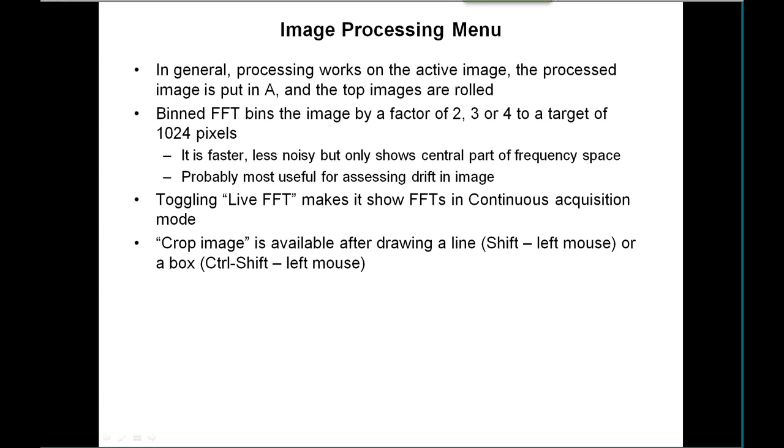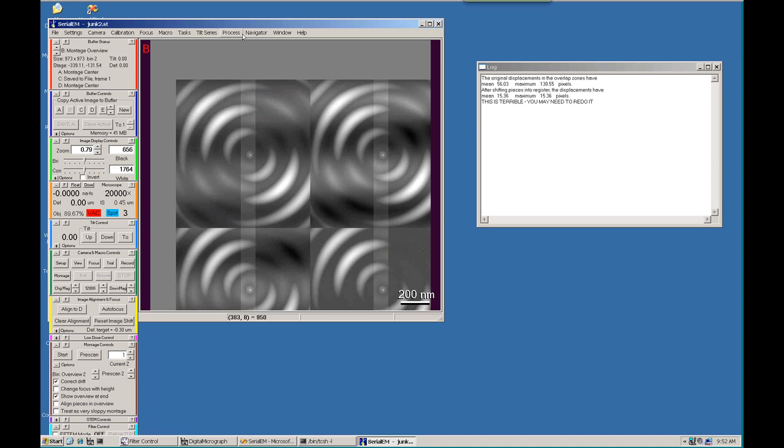It's going to be faster if you are trying to get fast. It's also going to be a little less noisy because it shows only the central part of frequency space. But it's probably most useful for addressing whether there's drift in the image. Now we have a live FFT option.